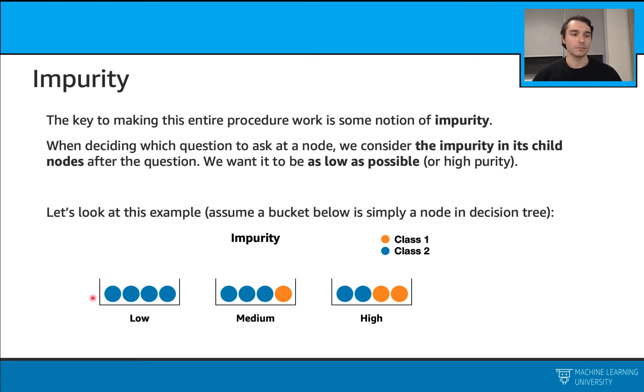In the first bucket, I have four data points from class 2, zero from class 1. In this case, this will have low impurity. In the second one, I have three to one, and this will give me medium level impurity. In the last one, I have two from class 1 and two from class 2. In this case, this will have some high level impurity.